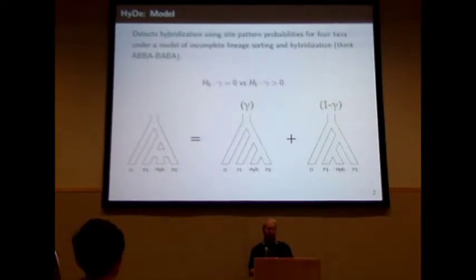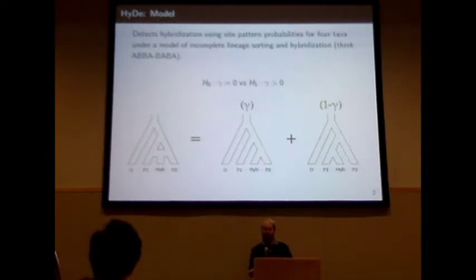It shares gamma percent of its genome with parent two, or it's paired with the first parent, and one minus gamma percent of its genome is from that parent. The hypothesis test we conduct is whether gamma equals zero or if it's greater than zero—whether there's hybridization or not.